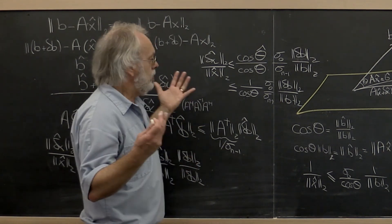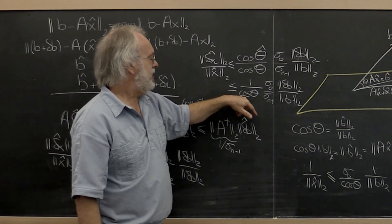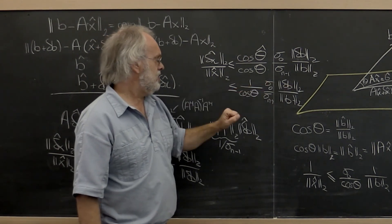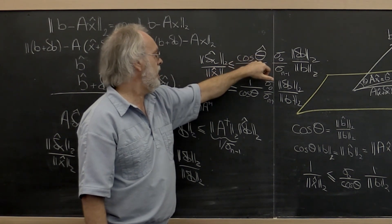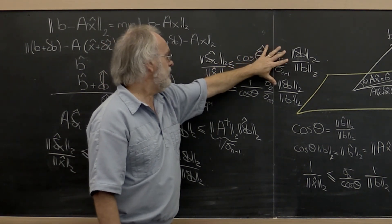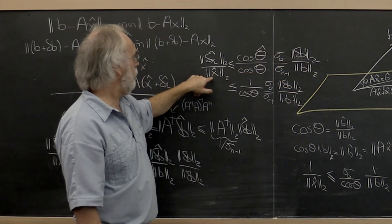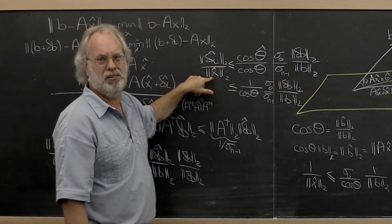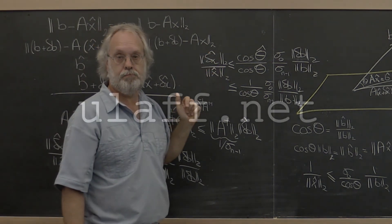Now you may want to think through: what happens if cosine(theta) is zero? What does that mean in the picture? And what happens if cosine(theta-hat) is zero? If cosine(theta-hat) is zero, then you're telling me that a change in the right-hand side has no effect on the solution at all. What does that mean? Think about it.